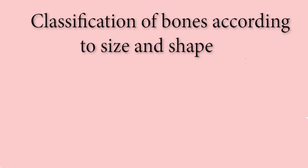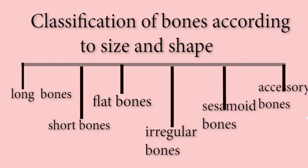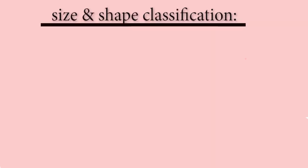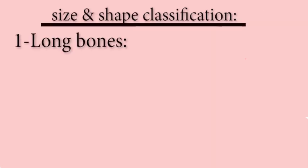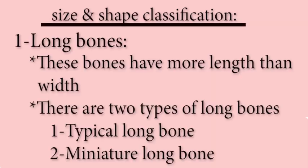Moving forward, we will talk about classification of bones according to their size and shape. As we already discussed, this classification is further divided into six groups. Let's start with long bones. These bones have more length than width, and therefore are called long bones.